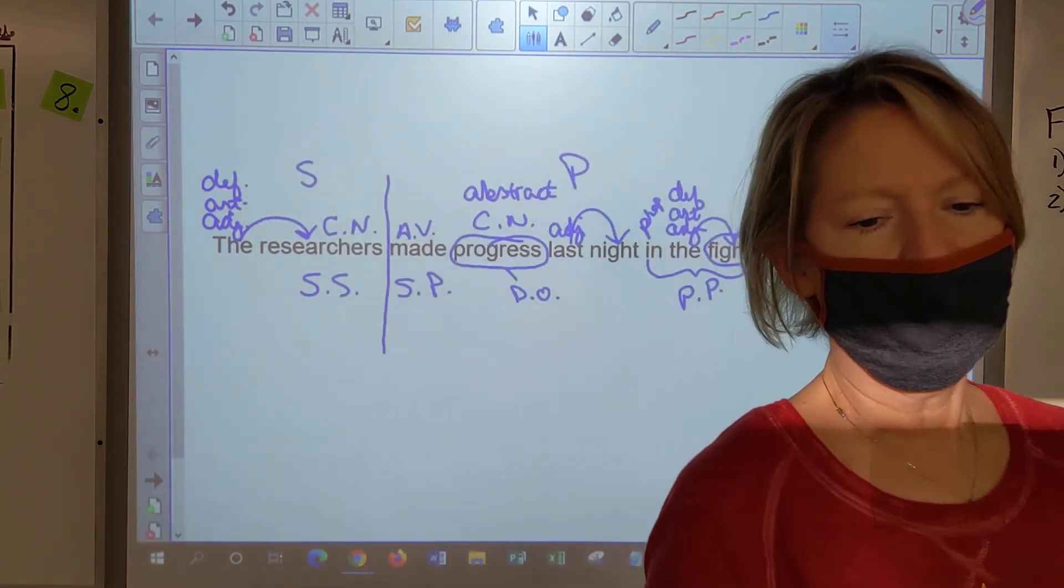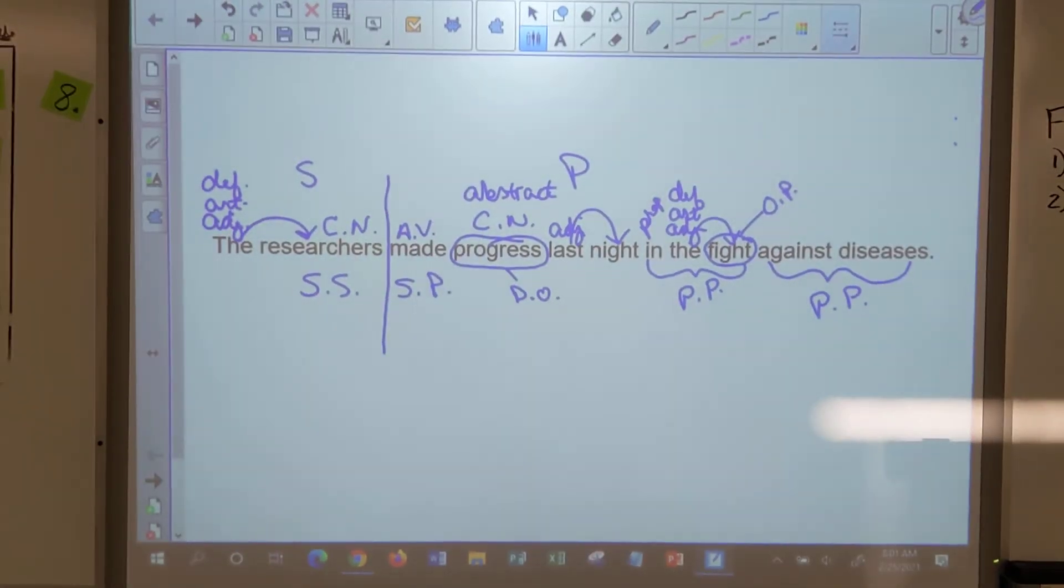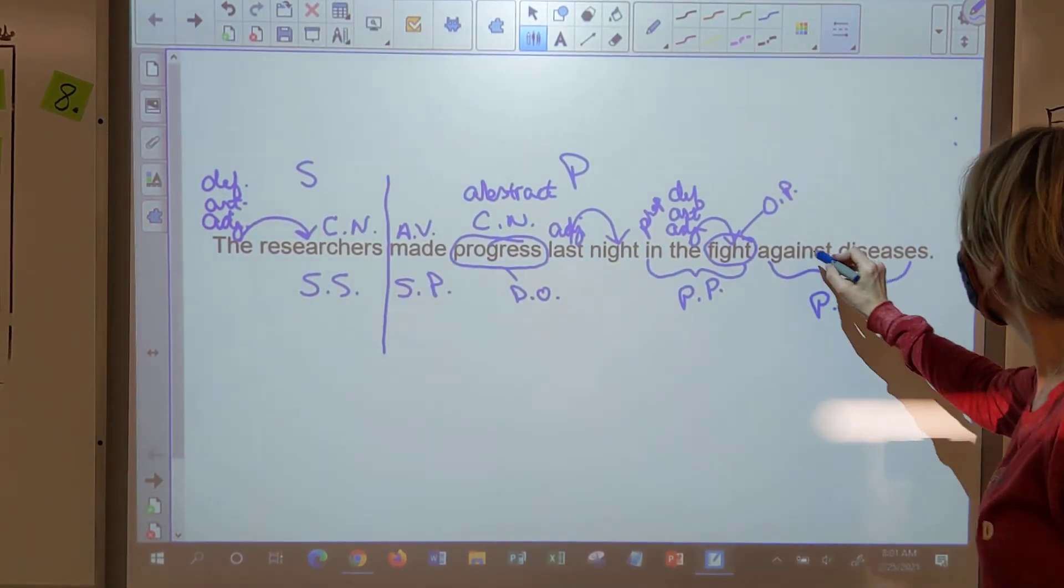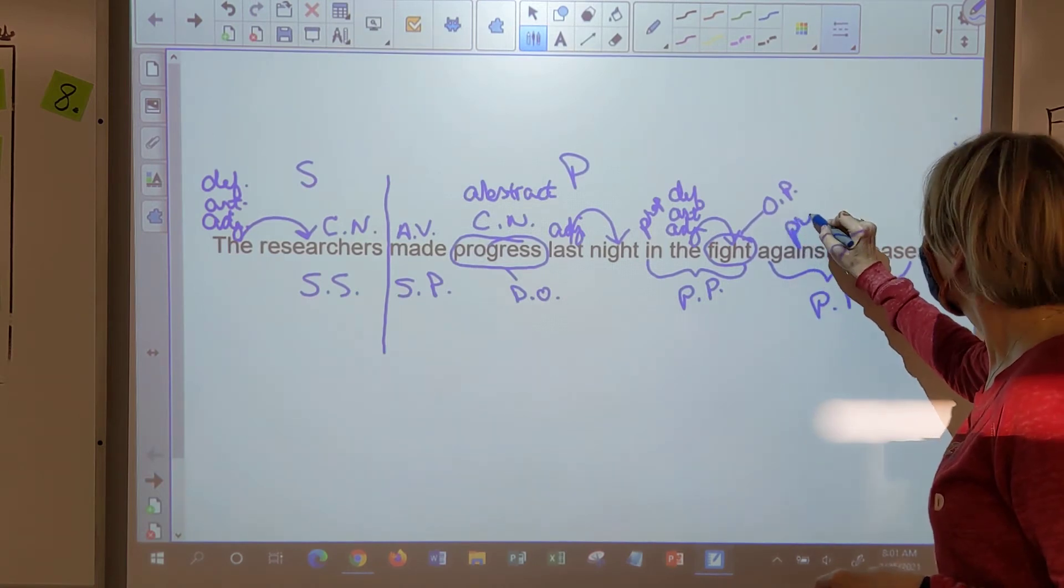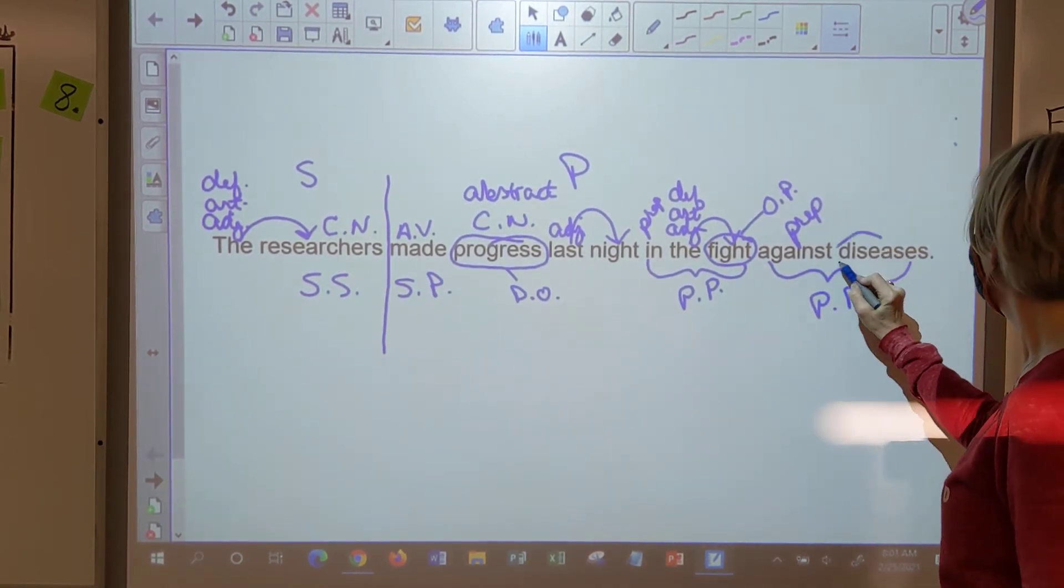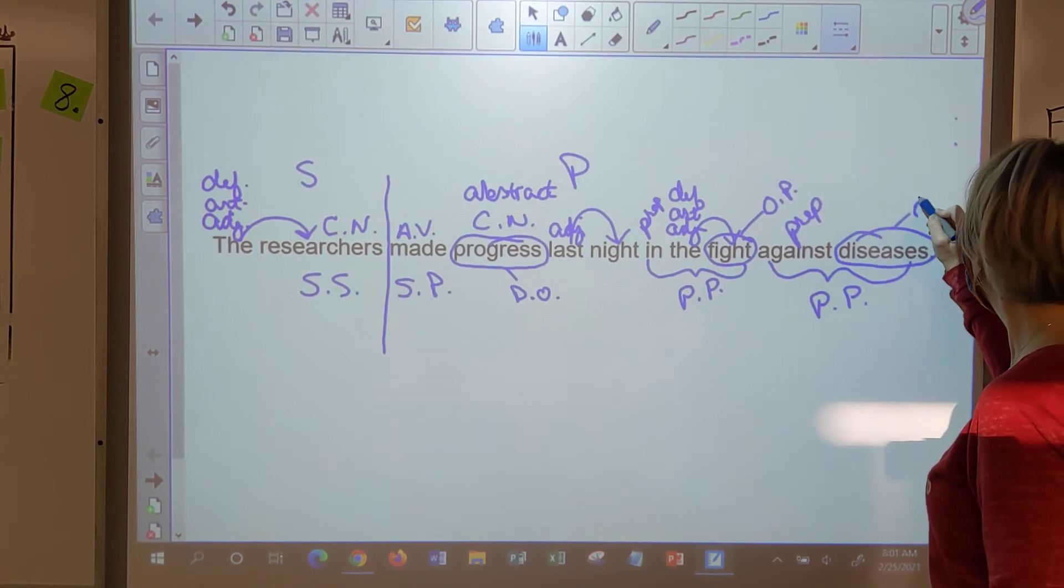Alright Ethan, we're starting over with you. In the preposition against diseases, against is preposition. In the preposition phrase against diseases. Against is preposition. Brie. Diseases is the object of the preposition.